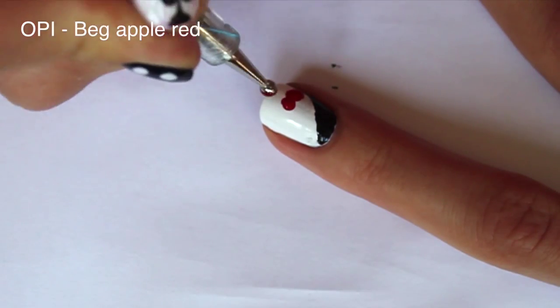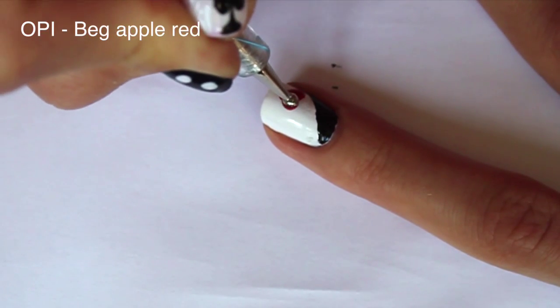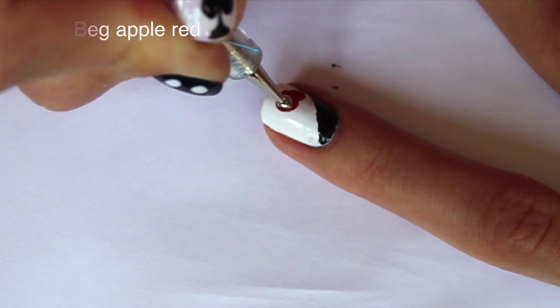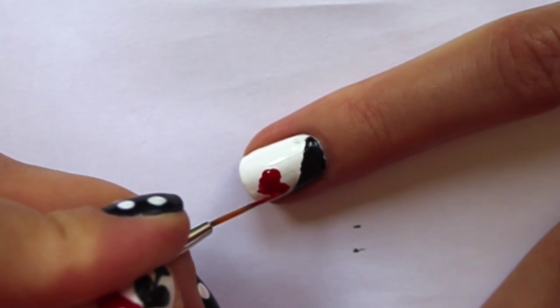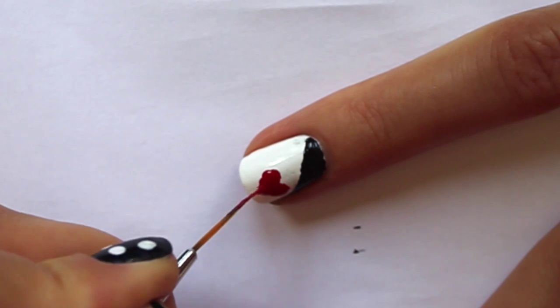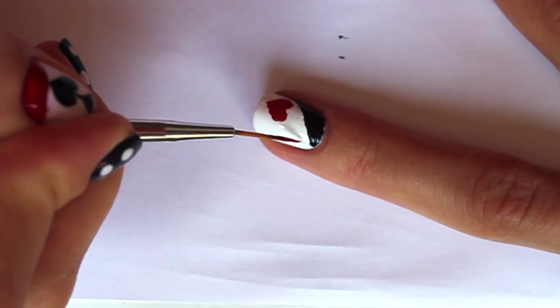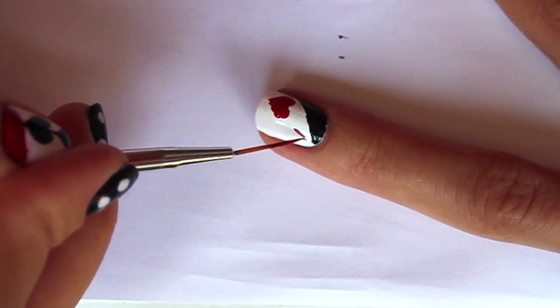Dip your dotting tool into red polish and create two dots on the side of the nail. Connect them for a heart shape and amend it with a thin nail art brush. Using the same brush, create a small letter A on the other side of the nail.